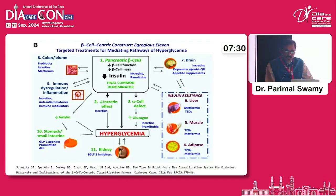Insulin resistance at different organ systems: the brain, the colon and microbiome, immune dysregulation, the stomach and small intestine, and the kidneys.